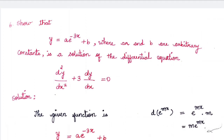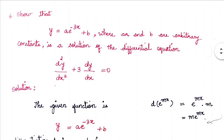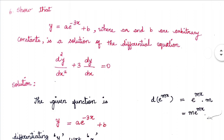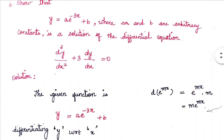Show that y = ae^(-3x) + b, where a and b are arbitrary constants, is a solution of the differential equation d²y/dx² + 3·dy/dx = 0.